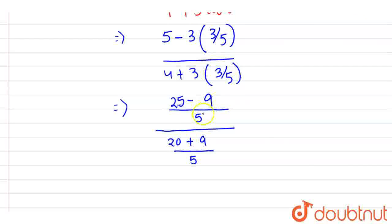Now we can see the 5s cancel each other. We are left with (25 - 9)/(20 + 9) = 16/29.